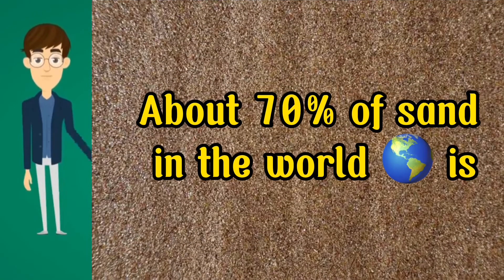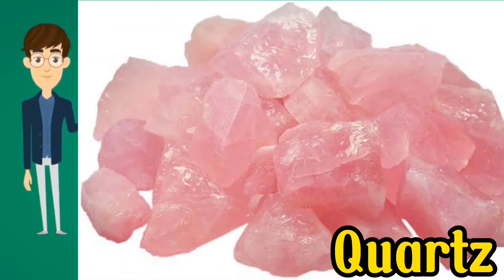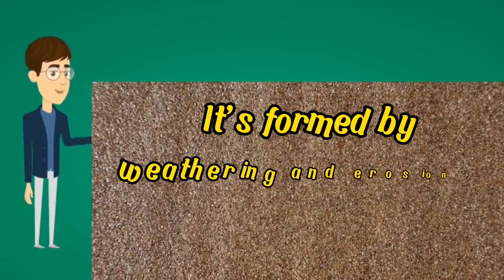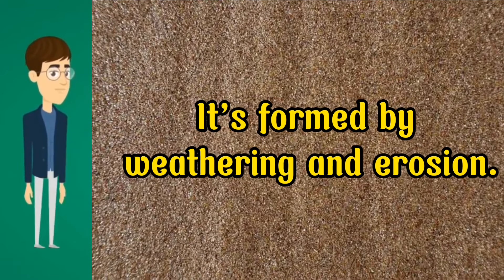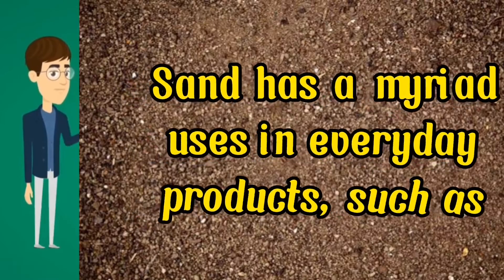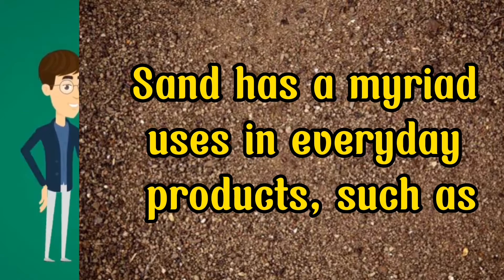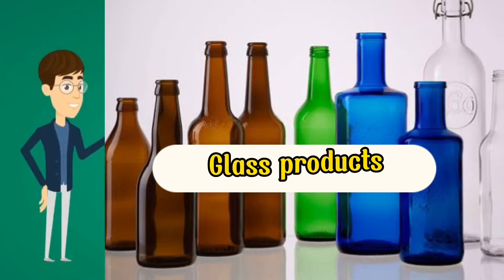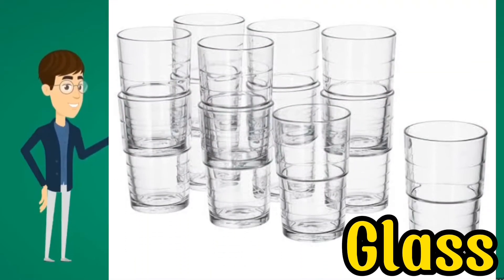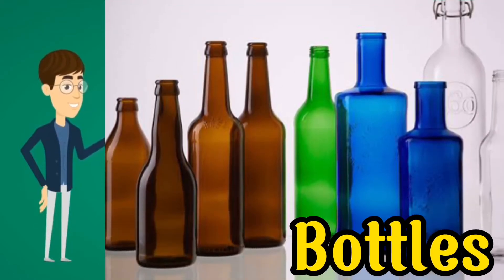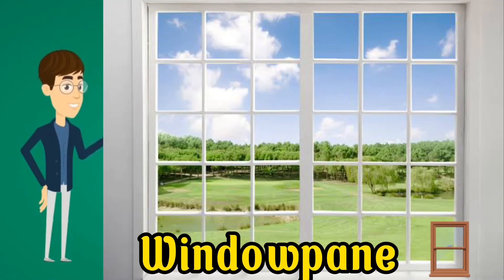About 70% of sand in the world is quartz. It's formed by weathering and erosion. Sand has a myriad of uses in everyday products, such as glass products like glass, bottles, and windowpane.